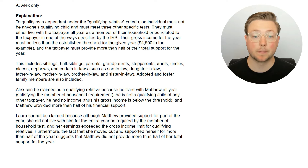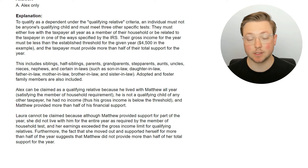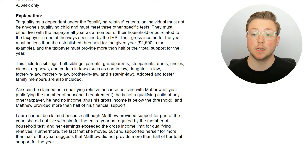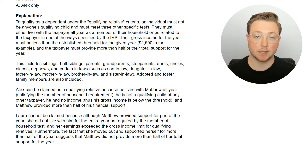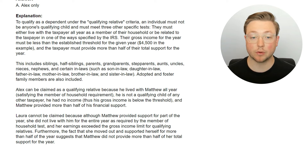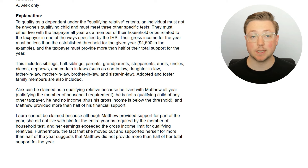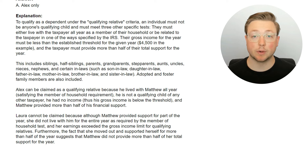Only Alex qualifies. To qualify as a dependent under the qualifying relative criteria, an individual must not be anyone's qualifying child and must meet three other specific tests. You can't be the qualifying child of somebody and also be a qualifying relative — it's either or. They must either live with the taxpayer all year as a member of their household, or be related to the taxpayer in one of the ways specified by the IRS. Their gross income for the year must be less than the established threshold — in this case $4,500. Note that $4,500 is not the actual current limit; in 2023 it was $4,700. Just know that there is a threshold, and if their gross income is above that threshold, they can't be a qualifying relative.